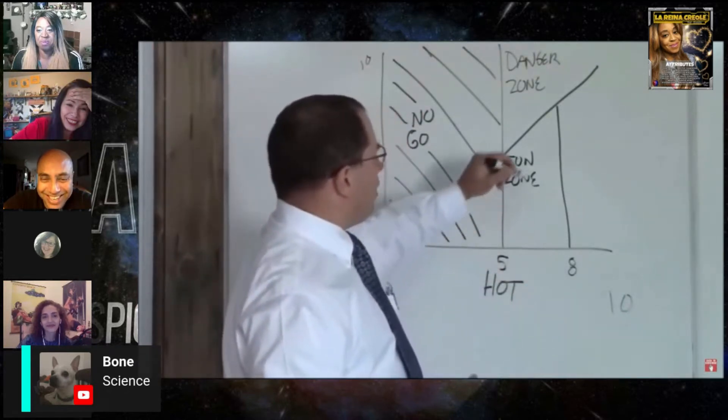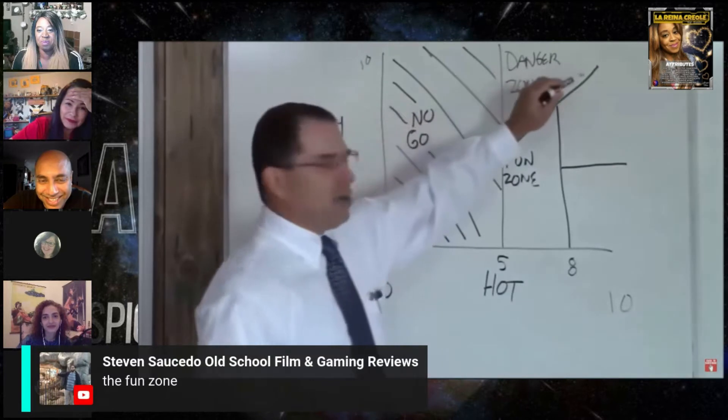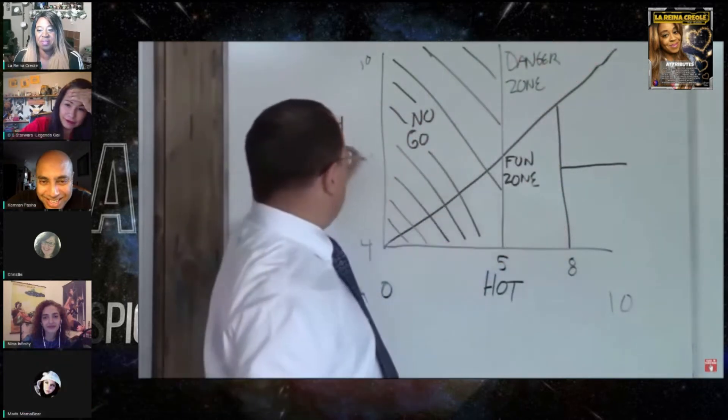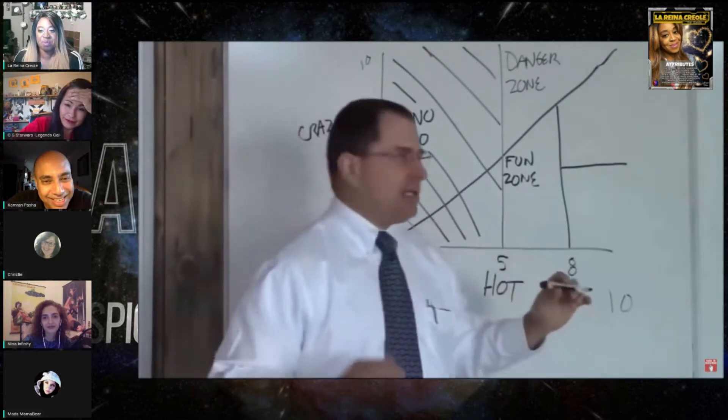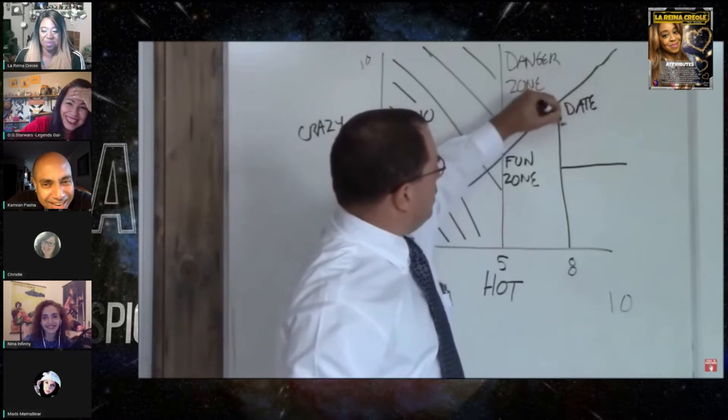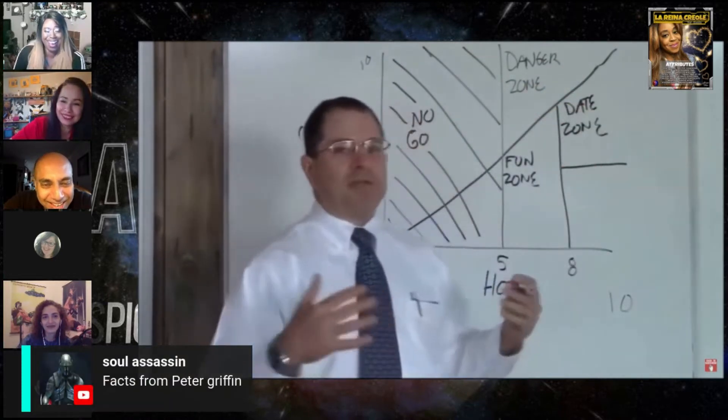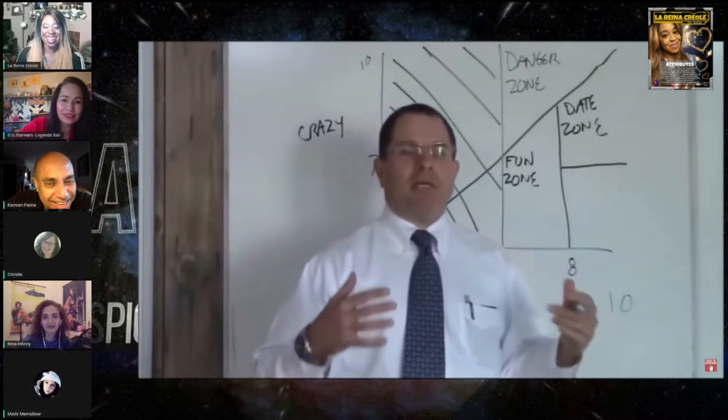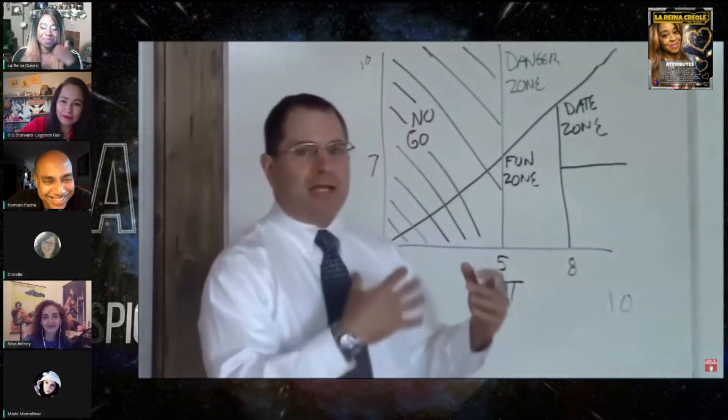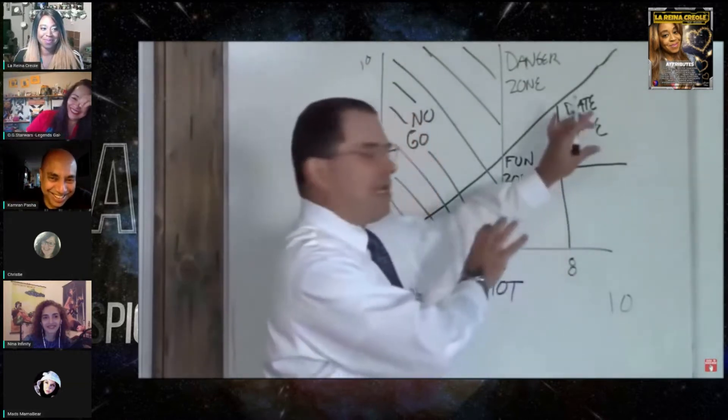Now moving on, this zone here is below the crazy line, above an eight hot but still about a seven crazy. You can stay in the date zone indefinitely. These are women that you introduce to your friends and your family. They're good looking and they're reasonably not crazy most of the time.